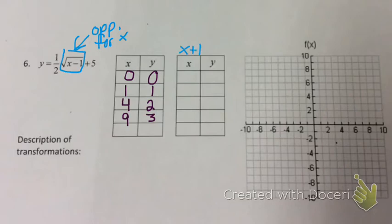When I do that, 0 plus 1 gives me 1, 1 plus 1 gives me 2, 4 plus 1 gives me 5, and 9 plus 1 gives me 10.